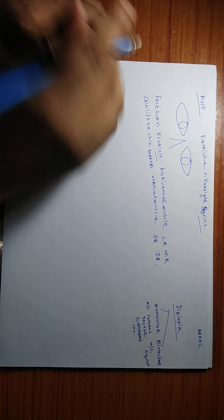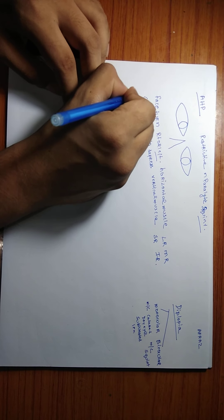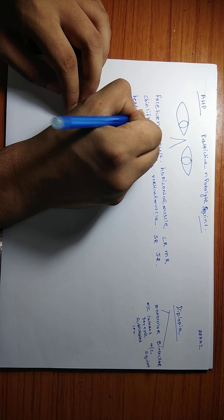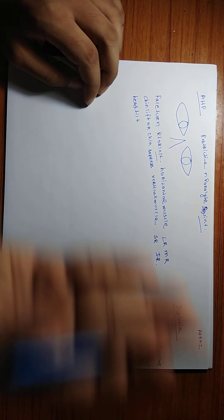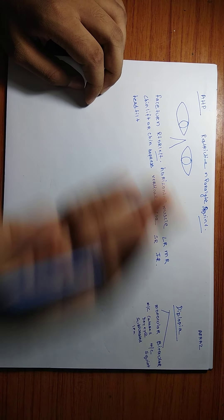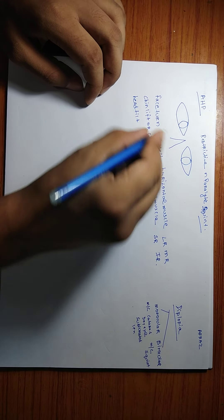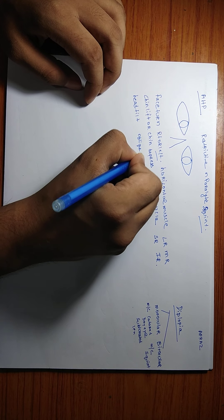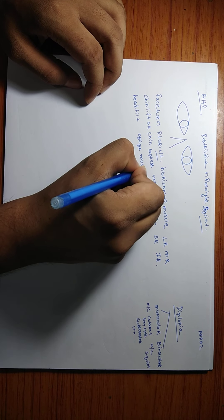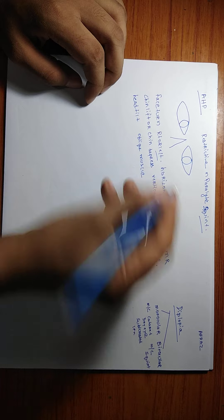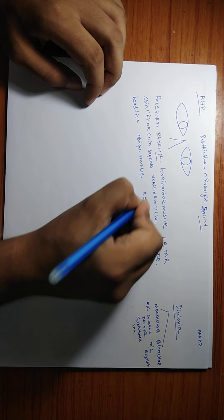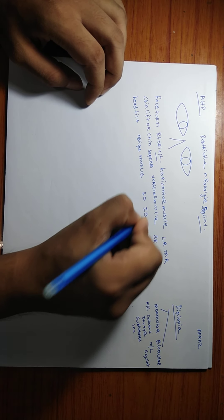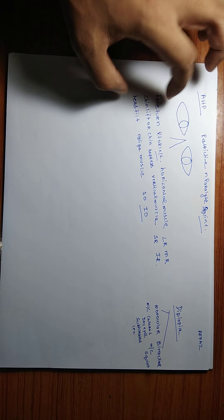Along with this, if we have head tilt, then we have an oblique kind of muscle involvement. The oblique muscles in our eye are the superior oblique and the inferior oblique. This is what we need to understand in abnormal head posture.